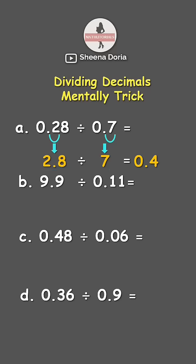Next we got 9.9 divided by 0.11. So let's make 0.11 a whole number. Let's move the decimal point to the right until it becomes a whole number. So that's 1, 2. So we move two places. 0.11 becomes 11.